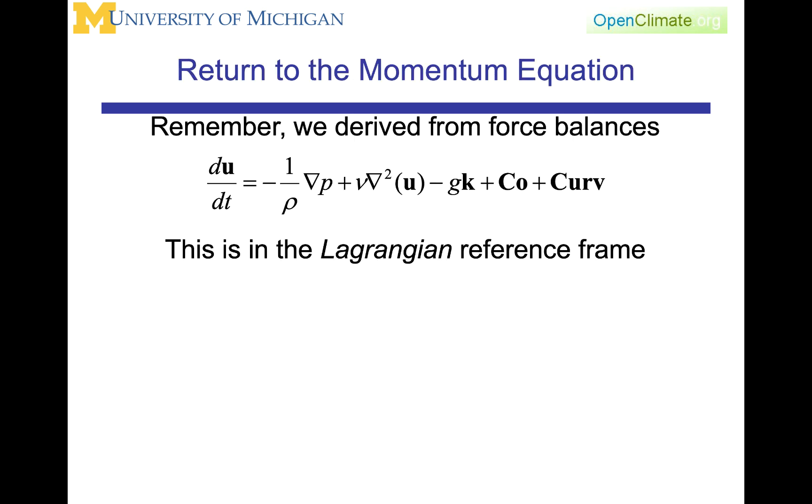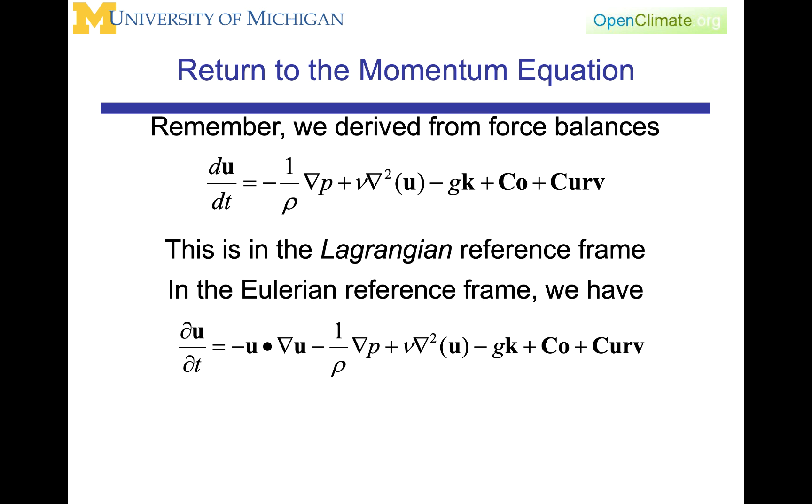If now we return to the momentum equation, this as written was written from a Lagrangian point of view. And remember, in the beginning when we used the parcel and we defined the Lagrangian point of view, we said it was a very good way for theoretical understanding and deriving the equations. In the Eulerian frame, we end up rewriting this equation as the partial ∂u/∂t is equal to this minus u·∇u, this form of the equation. I have gone back to the previous definition, which we wrote out in terms of partial derivatives, and written it in vector notation using the gradient term, and then the pressure gradient force, the viscous force, gravity force, Coriolis force, and the curvature terms.